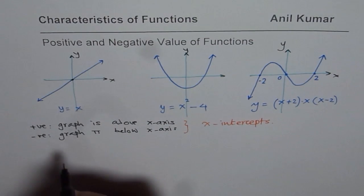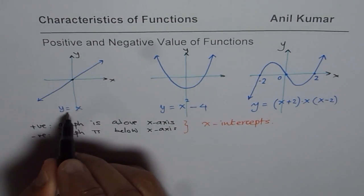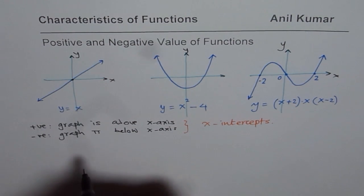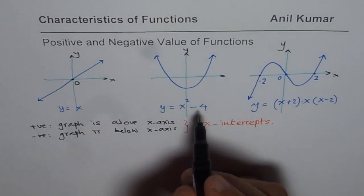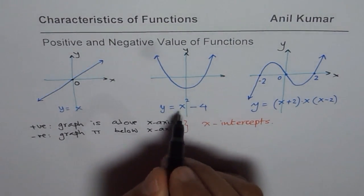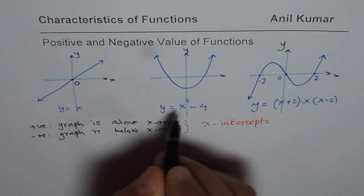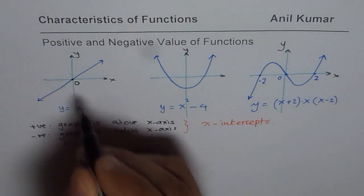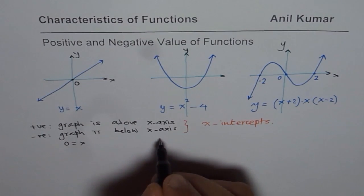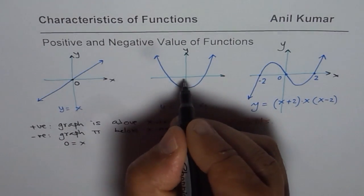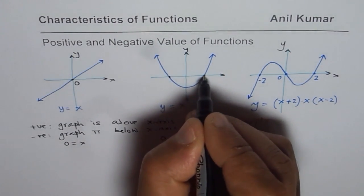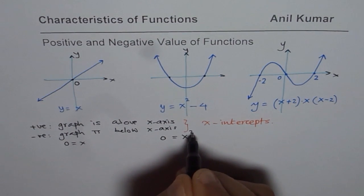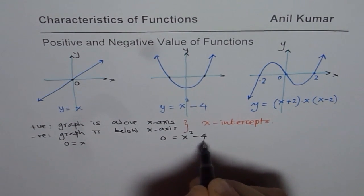The very first function, y equals x — when is it zero? This function is zero at x equals 0. We have to equate y to zero and find the value of x. In the first case, 0 equals x. In the second case, y equals 0, so at x-intercepts y is zero. We substitute 0 for y and calculate x.